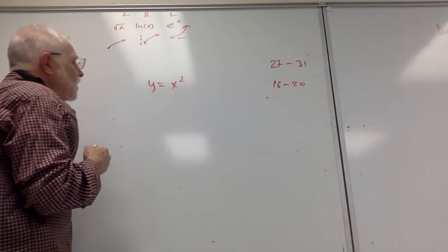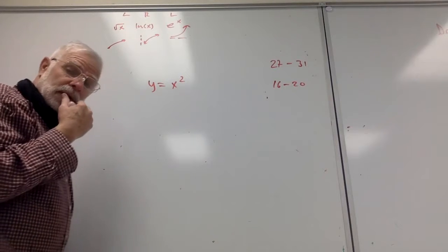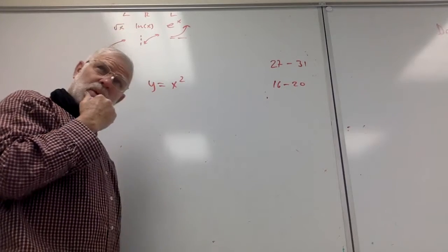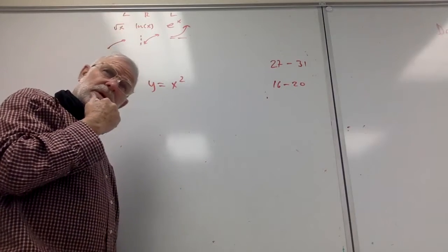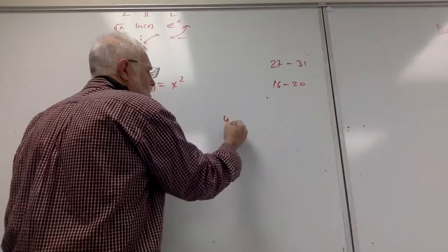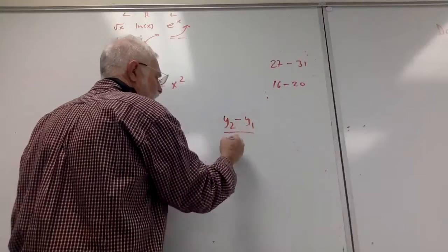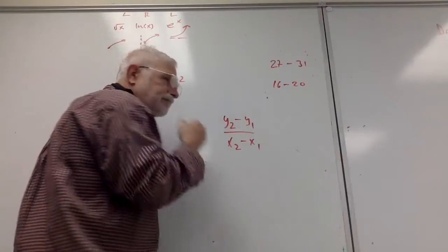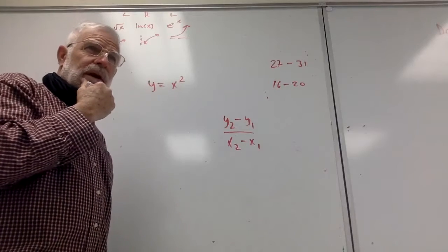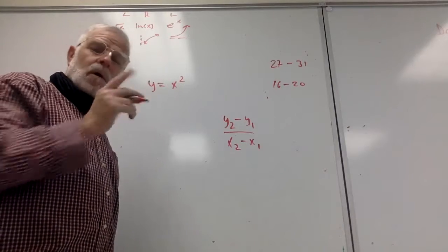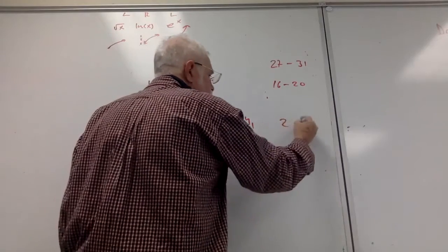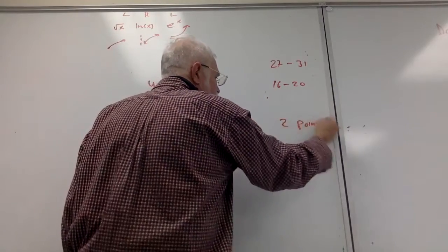I want to talk about slope right now. There's a formula for slope — y2 minus y1 over x2 minus x1. And in order to do that calculation, you need two points.